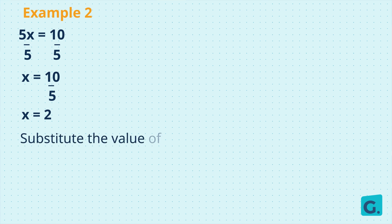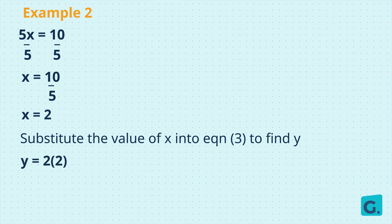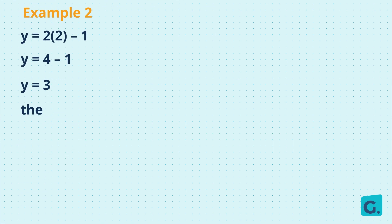Now let's substitute the value of x into equation 3. y equals 2 bracket 2 close bracket minus 1. 2 times 2 is 4, so y equals 4 minus 1, and y equals 3. The solution is x equals 2 and y equals 3.